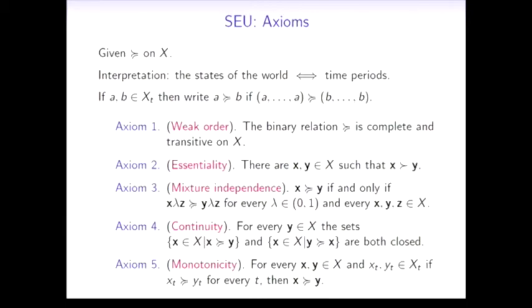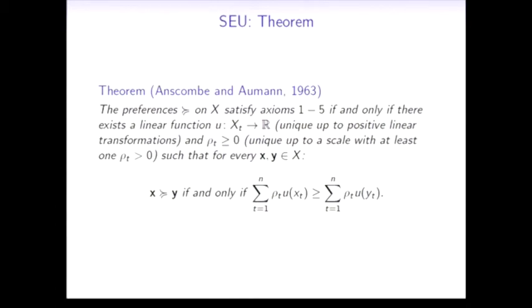Monotonicity states that if we prefer one consumption stream to another in each period of time, then overall one consumption stream is preferred to another. With all these five ingredients in place, it's possible to formulate Anscombe and Aumann's result from 1963, which states that the preferences on X satisfy axioms 1 to 5 if and only if there exists a linear function which is unique up to positive linear transformations and weights ρ_t such that for every consumption stream the following condition is satisfied.